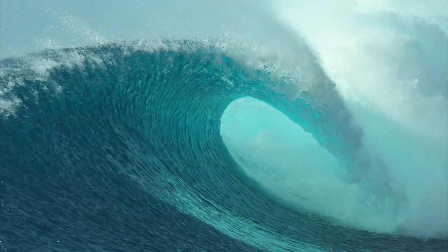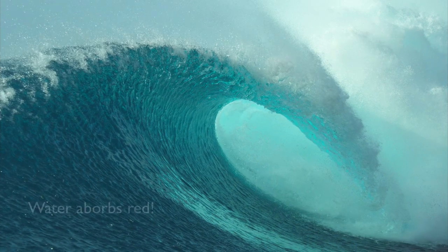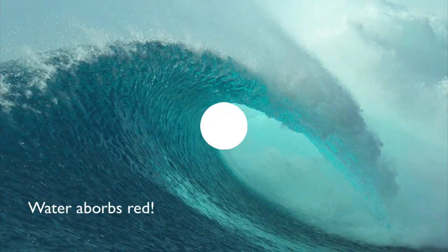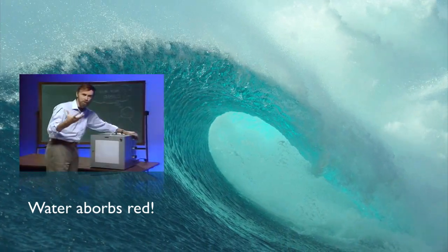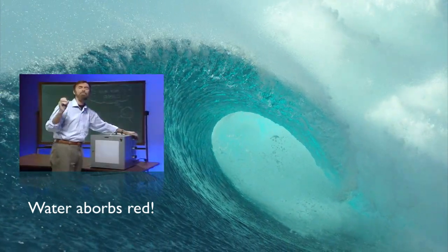You know what that means? That means that anything that will absorb red from the white will look cyan or a greenish blue. And that's the case of the oceans and the lakes of the world. The red light's absorbed and what's left is a beautiful greenish blue.